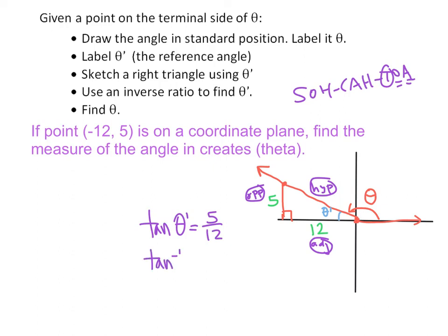We write: tangent of theta prime equals 5 over 12. Using inverse tangent to find the measure of theta prime, we get 22.620 degrees. That is the measure of this reference angle.